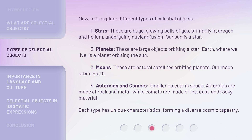Third, moons. These are natural satellites orbiting planets. Our moon orbits Earth. Fourth, asteroids and comets — smaller objects in space. Asteroids are made of rock and metal, while comets are made of ice, dust, and rocky material. Each type has unique characteristics, forming a diverse cosmic tapestry.